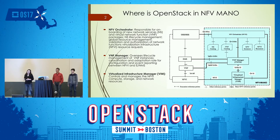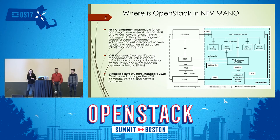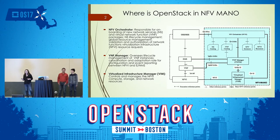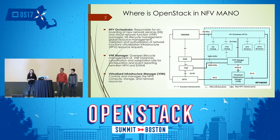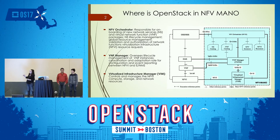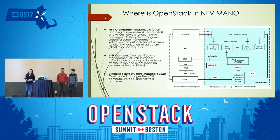The last but also very important component is the Virtualized Infrastructure Manager — that's the VIM. That's where we communicate with different backend cloud providers or infrastructure providers. That can be VMware, Microsoft, or any OpenStack version. OpenStack is an industry-standard for managing and operating different resources, so it's very normal today to adopt OpenStack in the NFV world to communicate with different infrastructure.